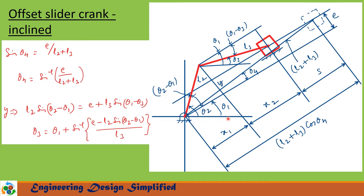The angle between the inclined line and the horizontal is theta 1, and the angle between the horizontal and the crank is theta 2. So the angle between this crank and the inclined line can be written as theta 2 minus theta 1. The angle between horizontal and the coupler link is theta 3. This line is parallel to the inclined line, so that is theta 1. Therefore, the angle between this inclined line and the coupler (red line) is theta 1 minus theta 3.